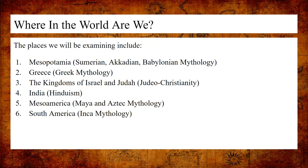We'll set the stage of where we're going to be looking today. First, we're going to be looking at Mesopotamia — Sumerian, Akkadian, and Babylonian mythology. Then Ancient Greece for Greek mythology. Then the kingdoms of Israel and Judah for the Christian and Jewish religions. Then India for Hinduism, Mesoamerica for both Maya and Aztec mythology, and finally South America for Inca mythology.